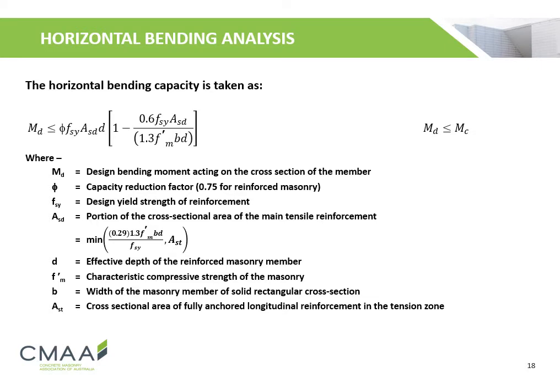The horizontal bending capacity shall be taken as the equation shown, where: MD is the design bending moment acting on the cross section; φ (capacity reduction factor) is taken as 0.75 for reinforced masonry; Fsy is the design yield strength of reinforcement; Asd is the proportion of the cross-sectional area of the main tensile reinforcement; d is the effective depth of the reinforced masonry member; F'm is the characteristic compressive strength of the masonry; b is the width of the masonry member of the solid rectangular cross section; and Ast is the cross-sectional area of the fully anchored longitudinal reinforcement in the tension zone.